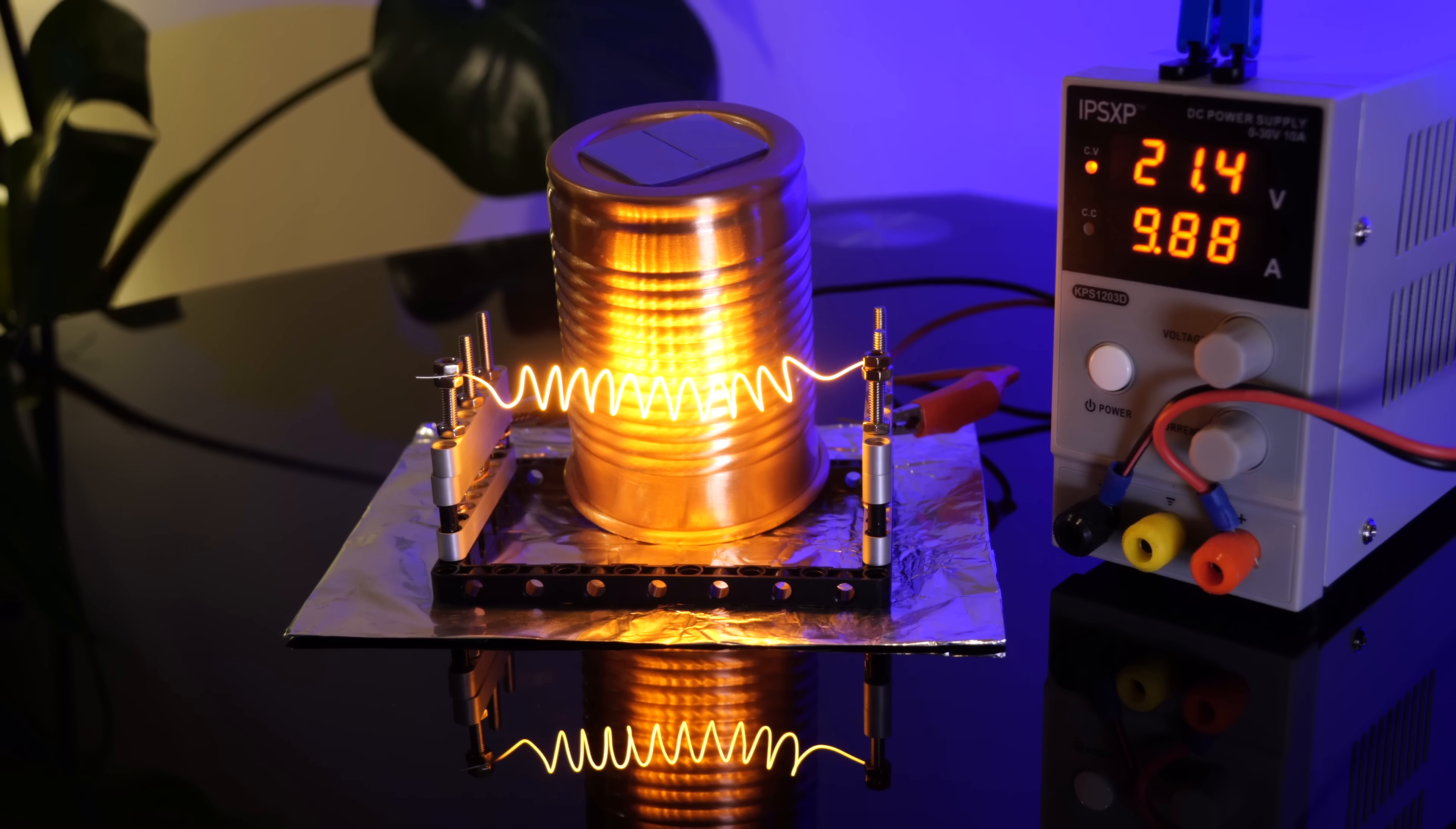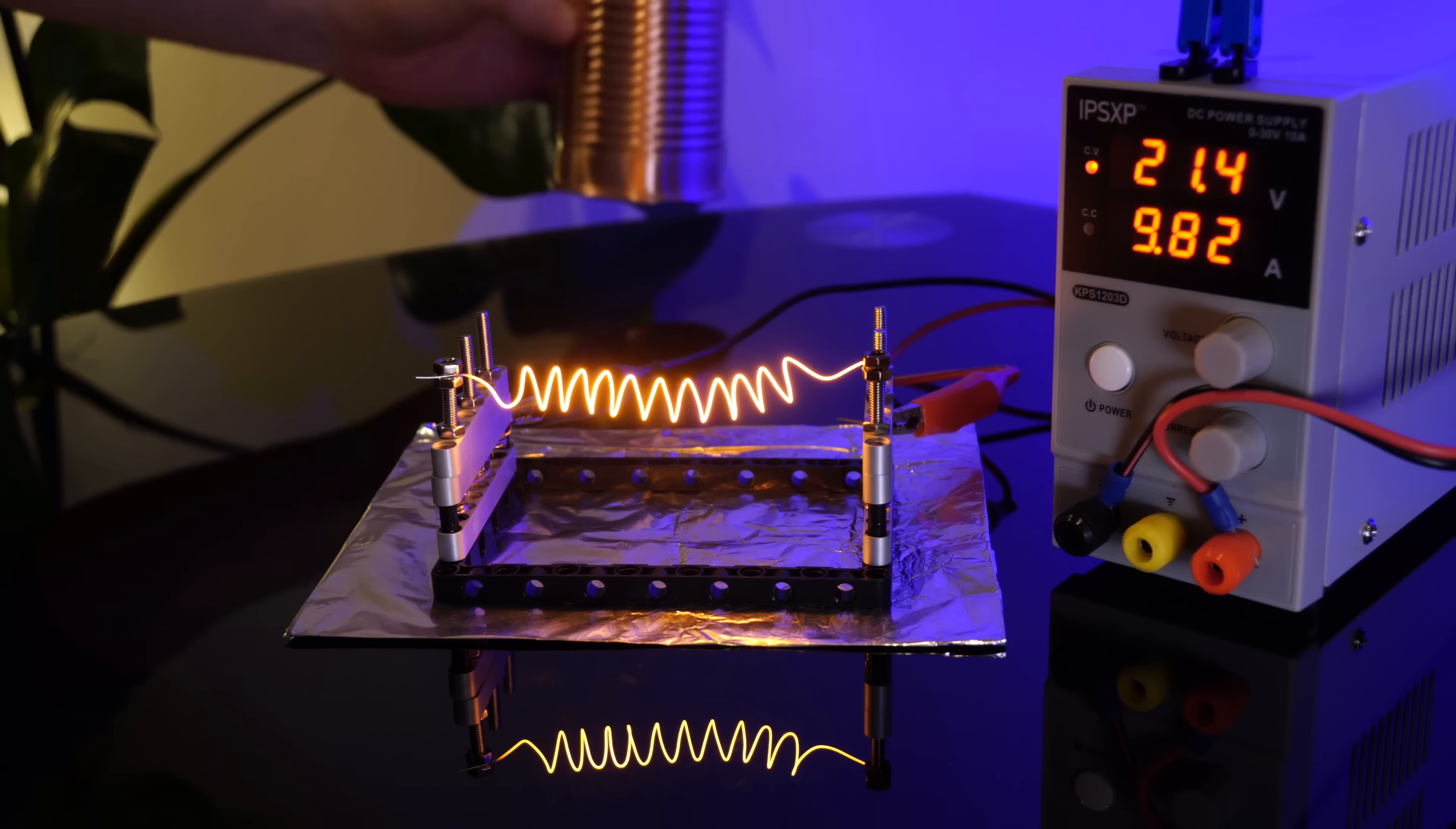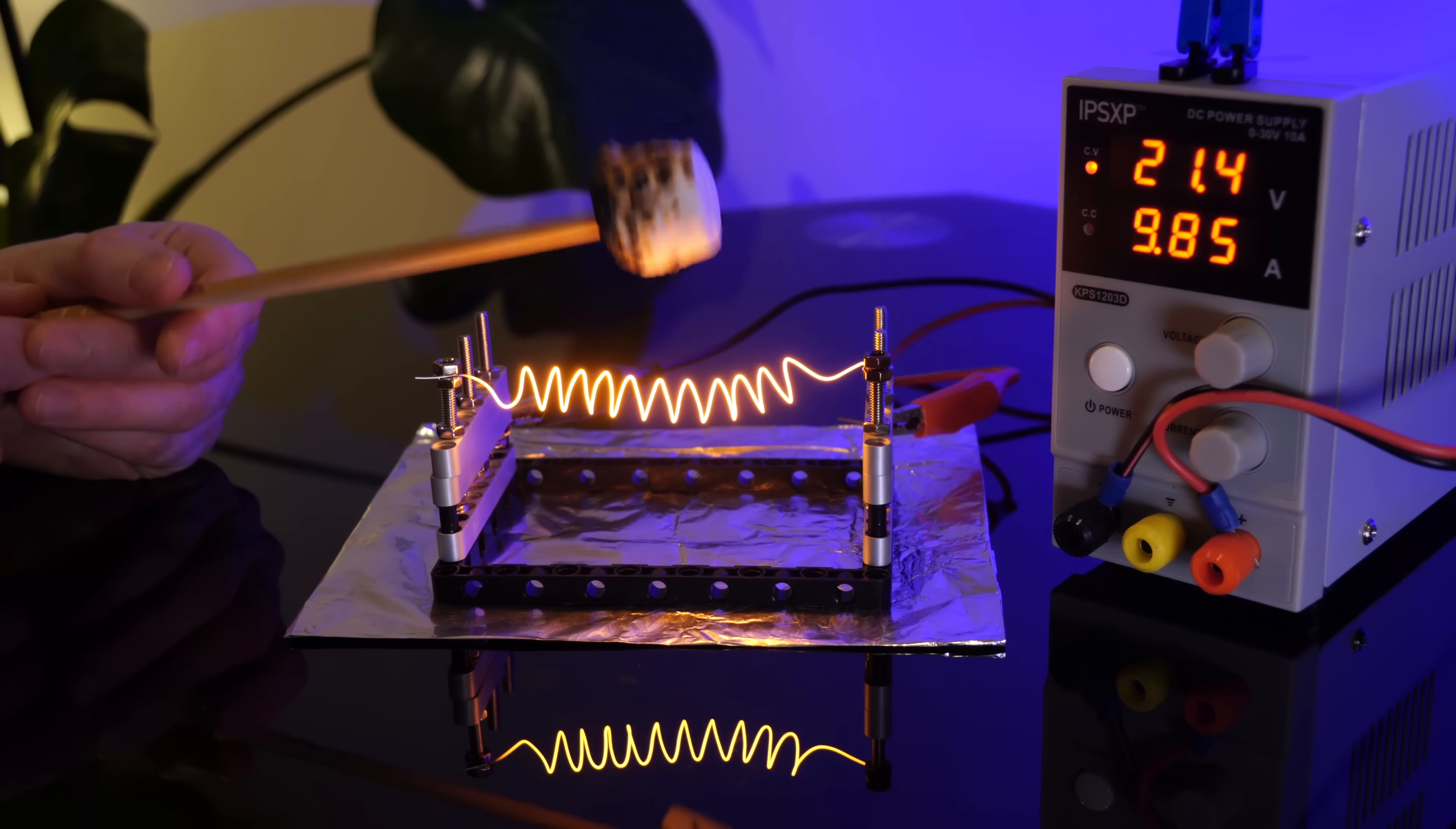Good Lord. Now we're getting around 240 degrees C, or 460 Fahrenheit, at 200 watts. Oh, that cup is hot. Can we toast our marshmallow now? Well, looks like we can cook marshmallows on it.